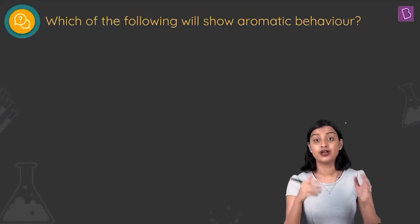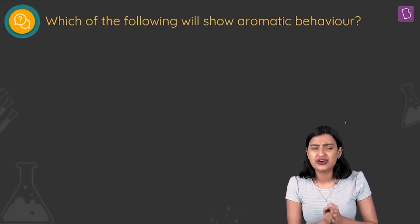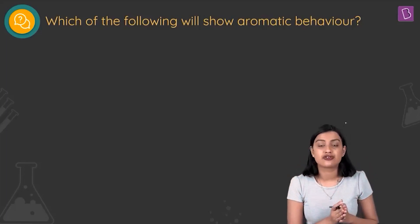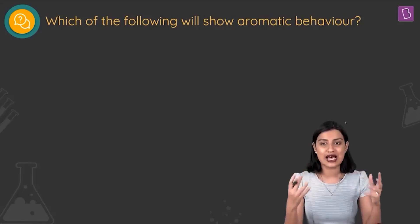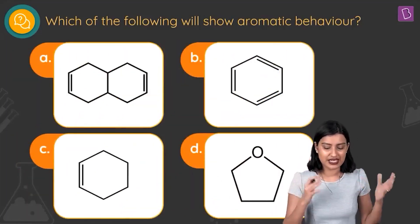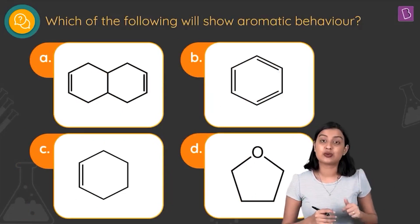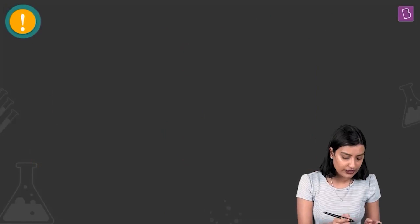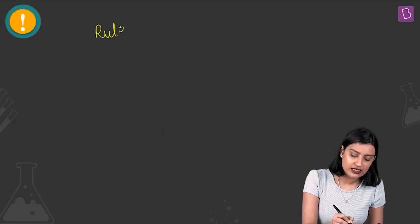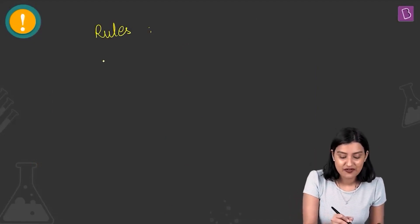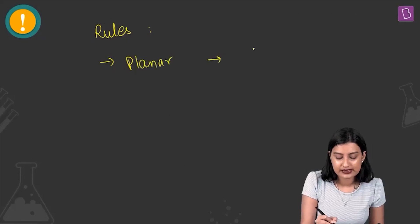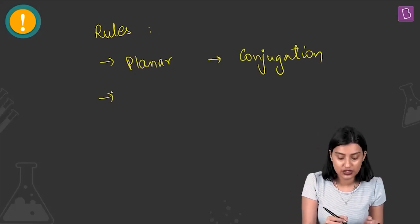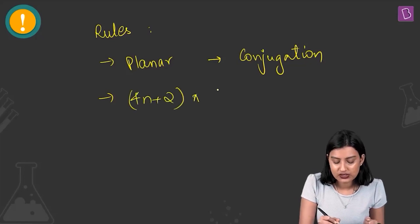The next question asks which of the following will show aromatic behavior — an important question that appears in almost every competitive exam. Before identifying the answer, we need to understand the rules of aromaticity. These are Hückel's rules: first, the molecule must be planar; second, it must have conjugation; third, the ring must contain 4n+2 pi electrons.